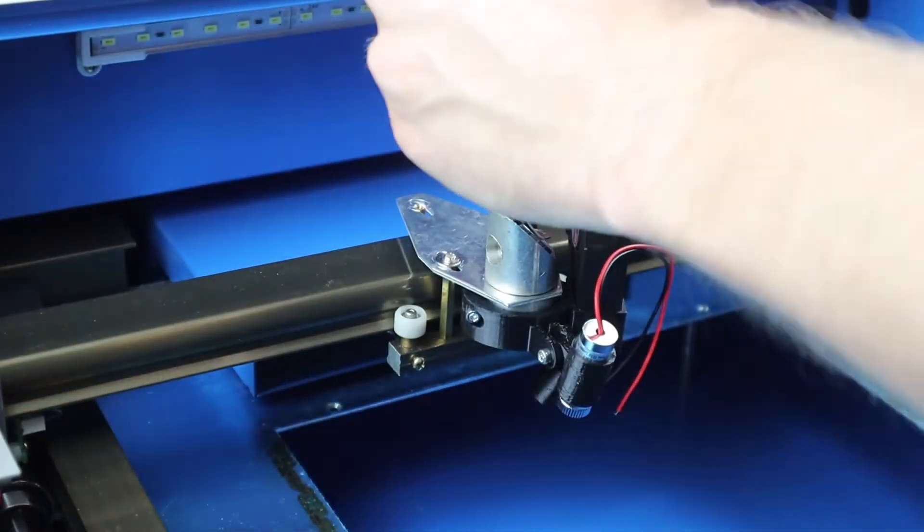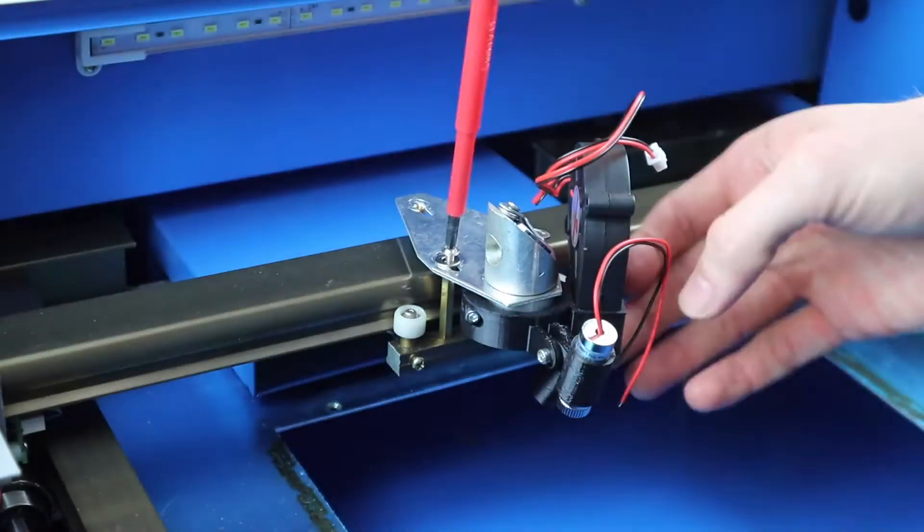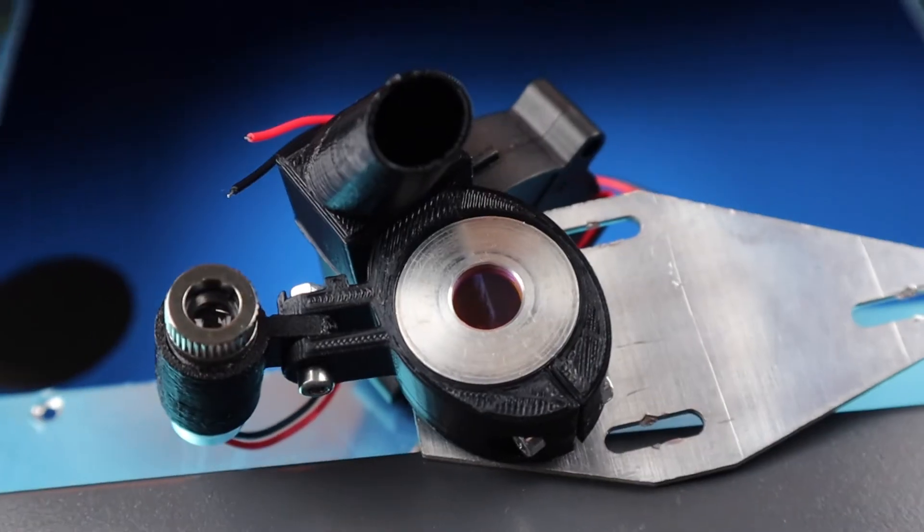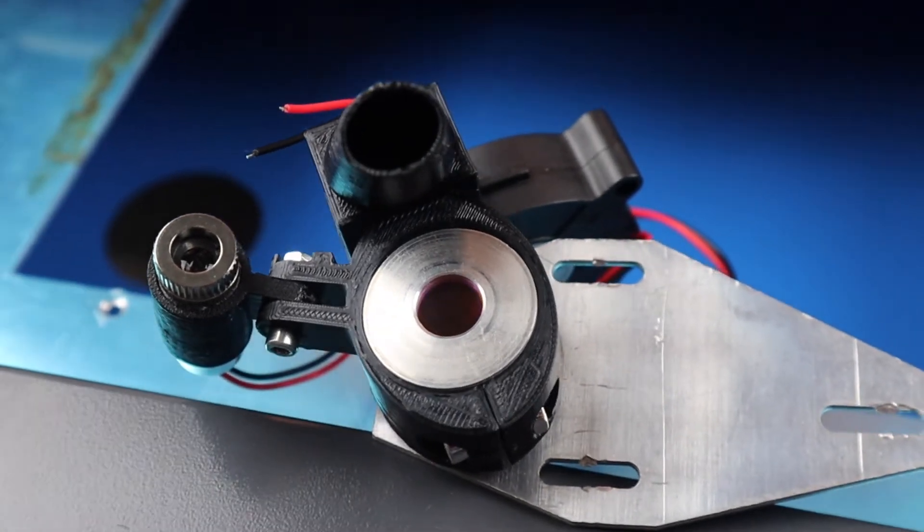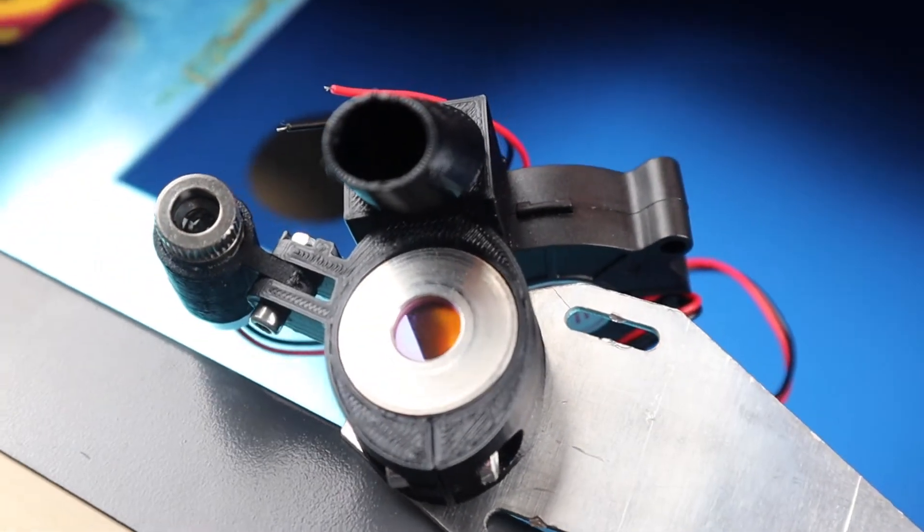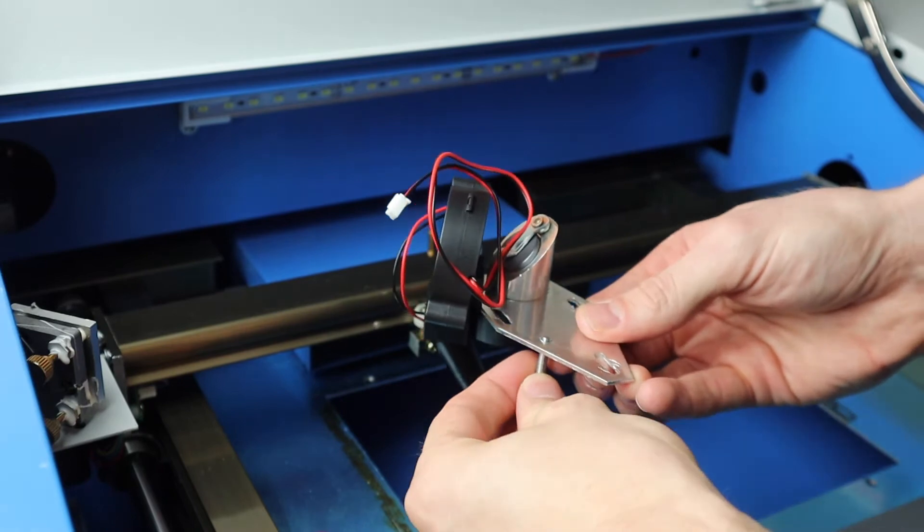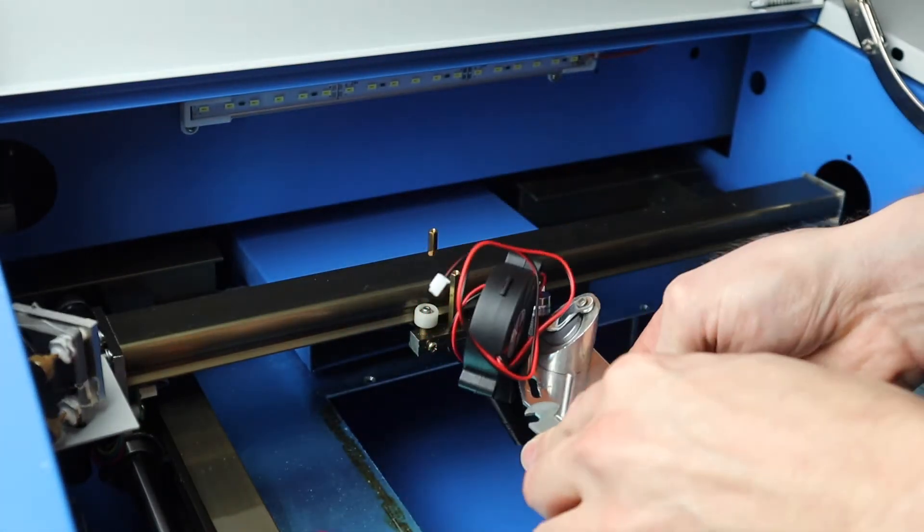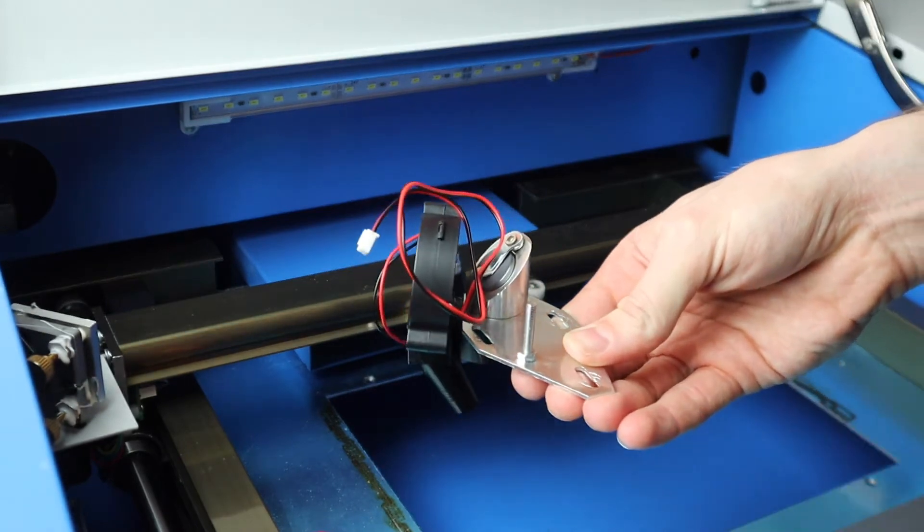First, we'll need to add an anchor screw onto the head of the laser. I took the head off for this step as it's easier to work with. I drilled a 4mm hole on one side of the head and added an M4 screw which was long enough to fit through the drag chain, and then replaced the head.